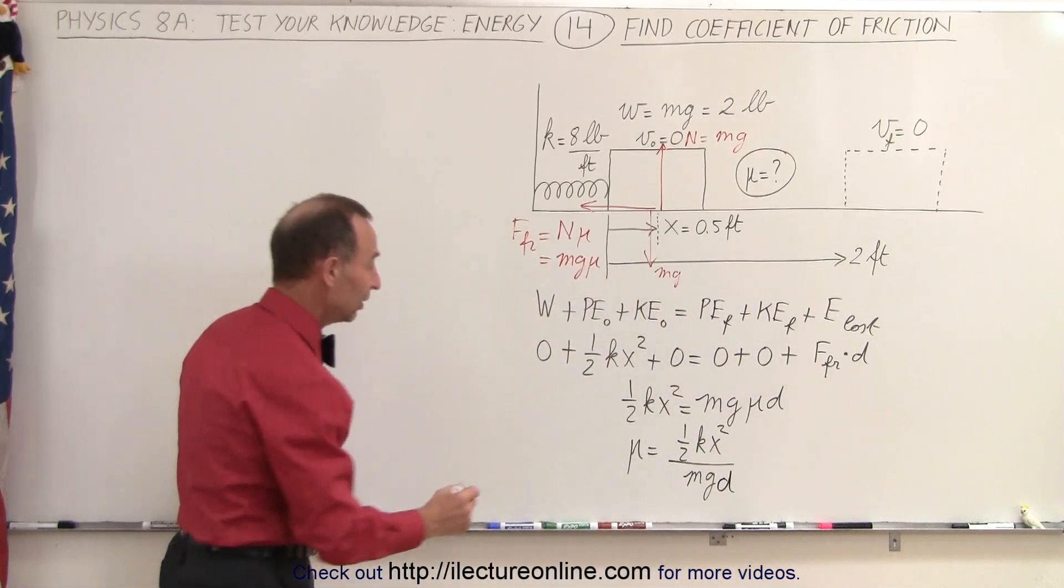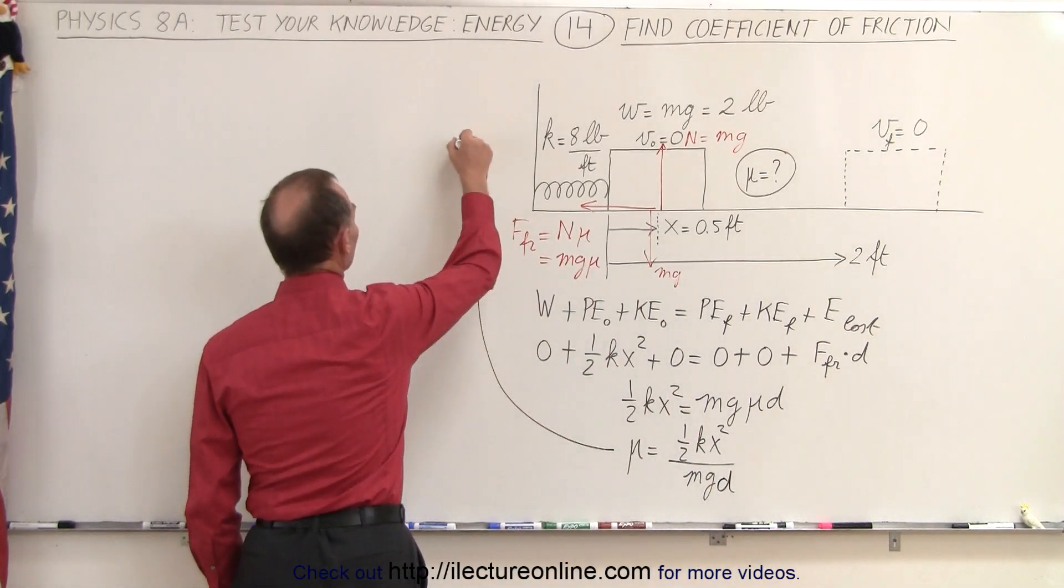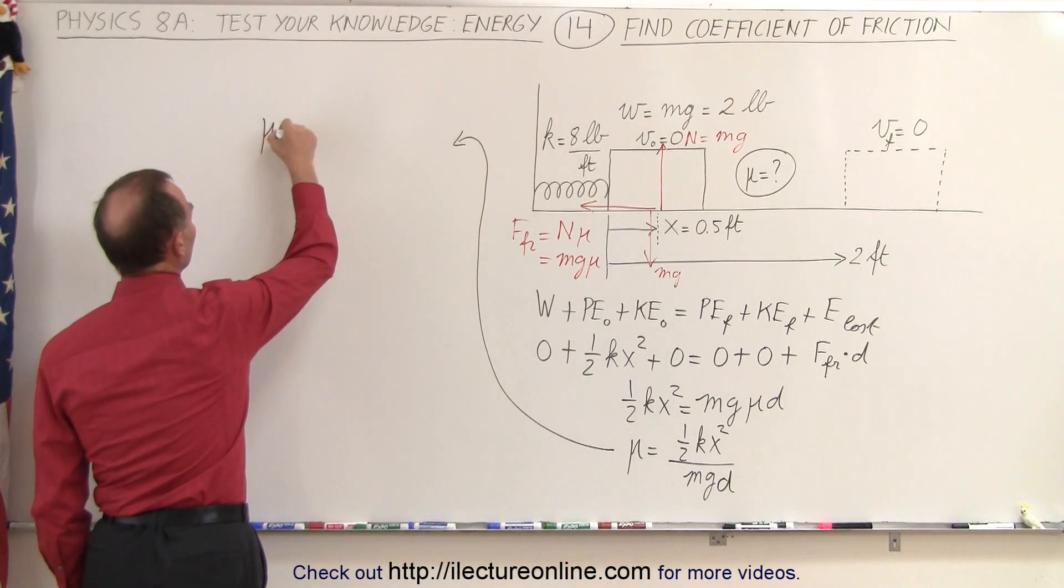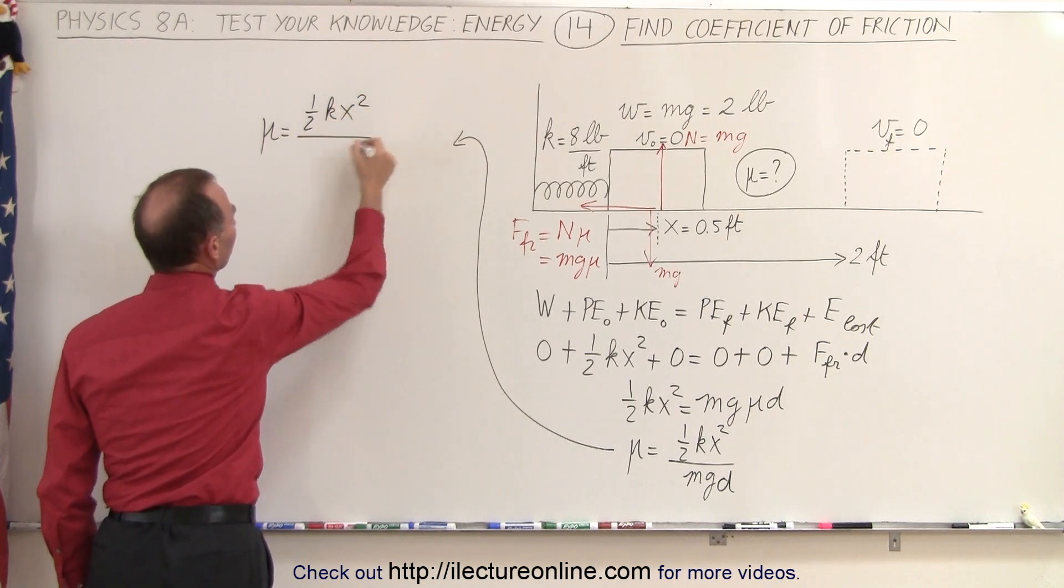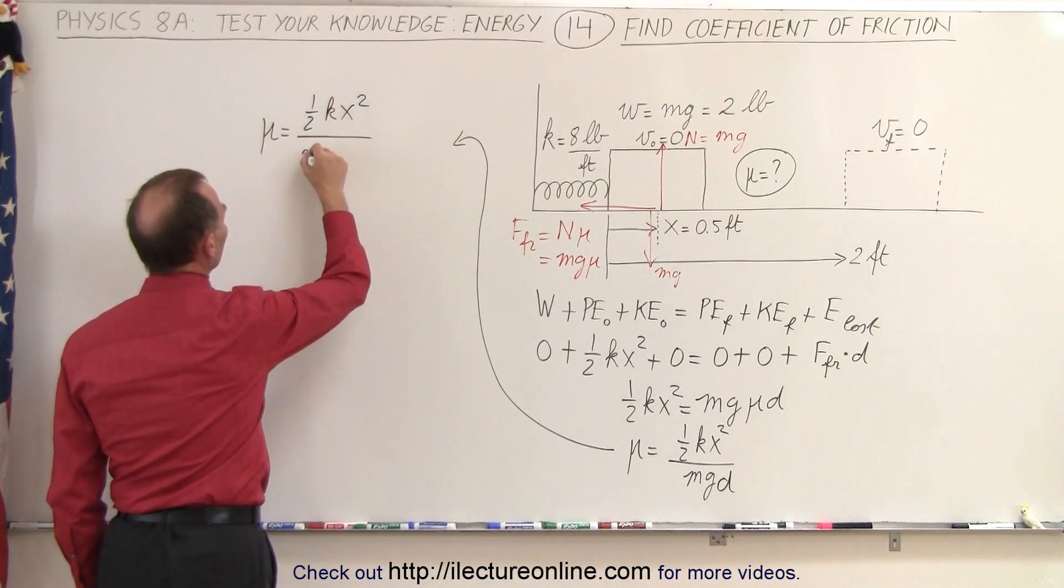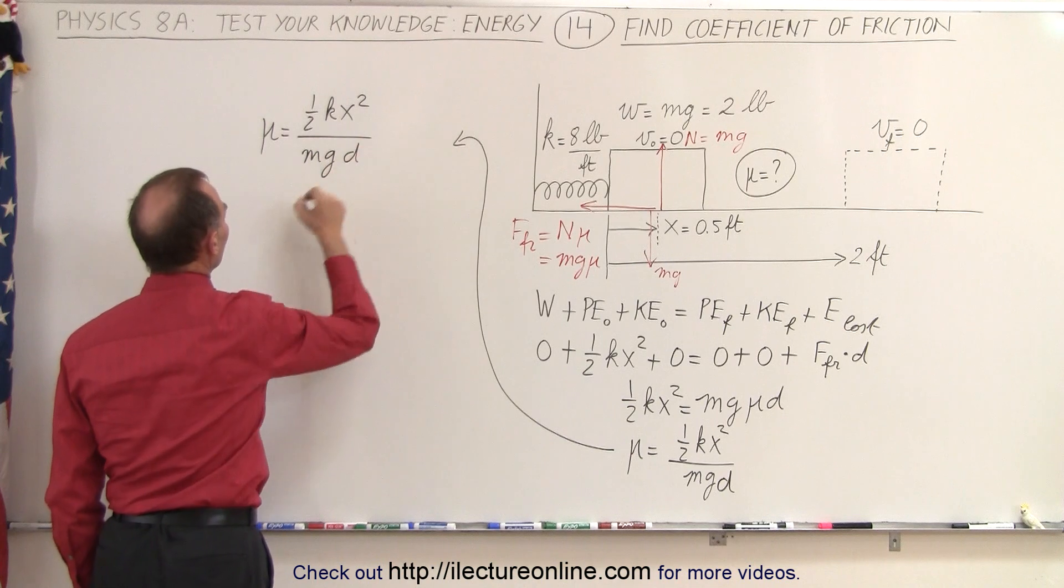Now we're ready to calculate what that is equal to. So going over here to complete. So let's rewrite the equation. Mu is equal to the energy stored in the spring, one half kx squared divided by the weight times the distance.